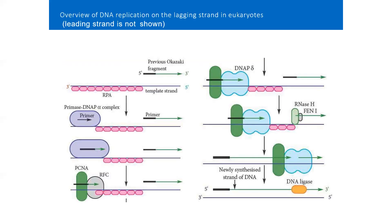During elongation, the protein called Replication Factor C, abbreviated RFC, binds to the primer. RFC acts as a clamp loader to another protein named Proliferating Cell Nuclear Antigen, abbreviated PCNA. The PCNA forms a circular clamp around the DNA that is capable of moving on it — a sliding clamp. At this stage, DNA polymerase delta binds to the sliding clamp and starts elongating the new DNA strand.